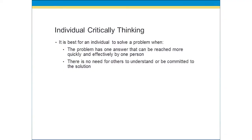Now let's talk about individual critical thinking. As an individual, being a critical thinker is going to be a huge skill because it'll allow you to solve problems on your own. But there are appropriate times for individual critical thinking. If the problem only has one answer that can be reached more quickly and effectively by one individual, that's when individual critical thinking should take place — meaning the problem needs to be solved immediately and it really only has one answer. Then one person can make the decision quickly and move forward. Individual critical thinking should only take place when it's appropriate and best for a single individual to solve the problem quickly and when there is one answer.